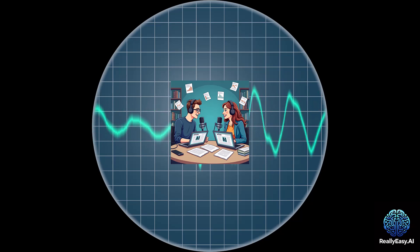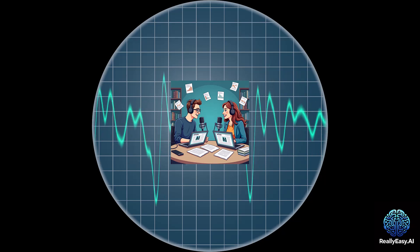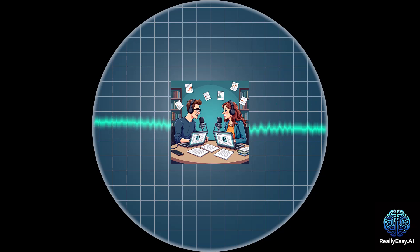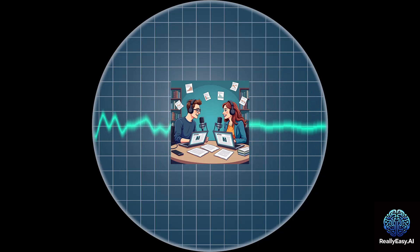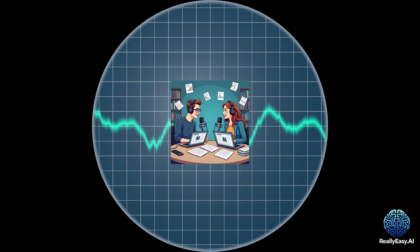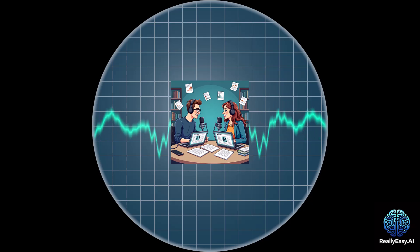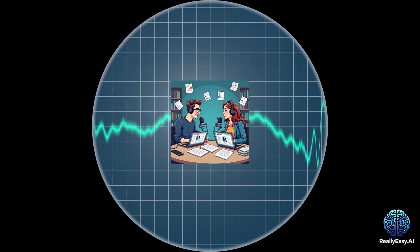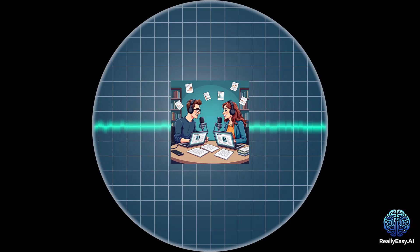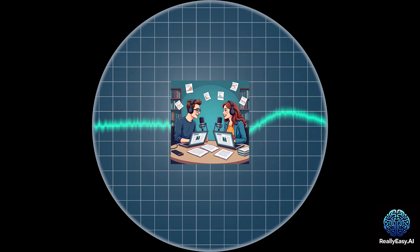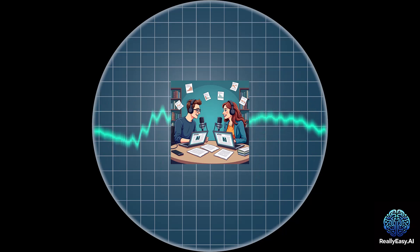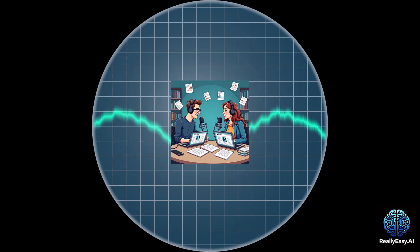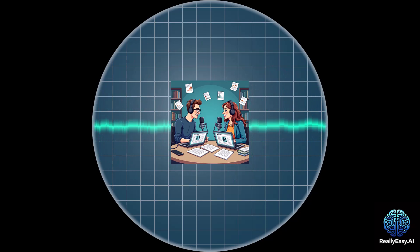Most older agents use System 1 — fast, intuitive thinking, like recognizing an icon and clicking without thinking, the brain on autopilot. That's fine for simple stuff but not for complex tasks requiring planning, strategy, and adapting when things go wrong. UI-TARS goes beyond that with System 2 — the more deliberate thinking we use for tough problems. It actually thinks through the steps like a human would, which lets it handle harder tasks that would trip up other AIs.